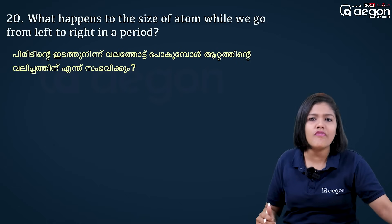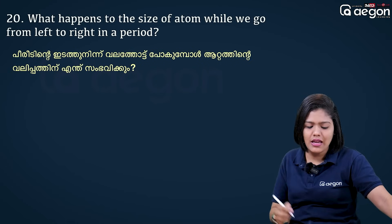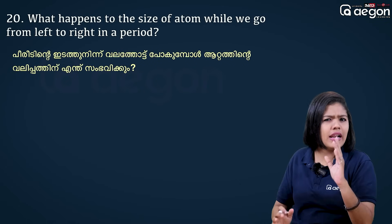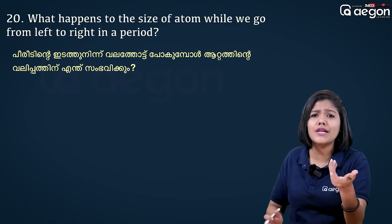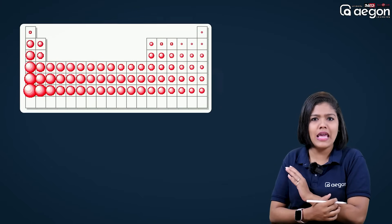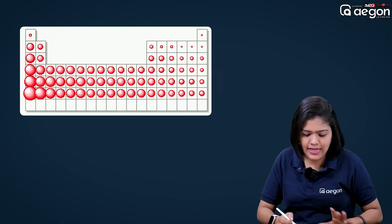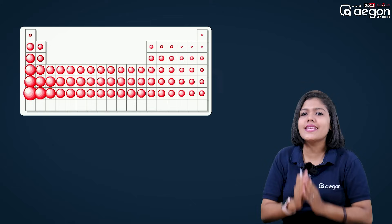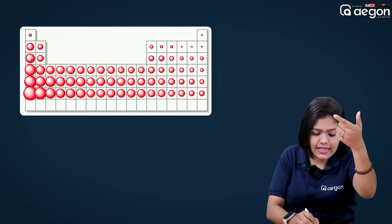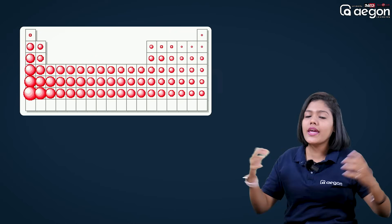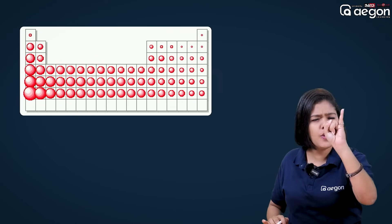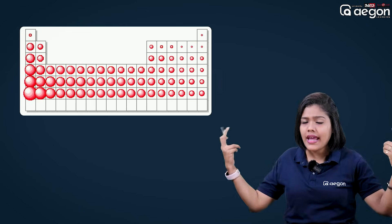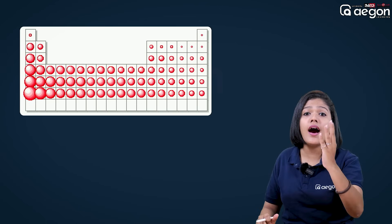What happens to the size of an atom when we go from left to right in a period? In the periodic table, when you go from left to right, the atomic size decreases. From top to bottom, the atomic size increases. The ionization energy, metallic and non-metallic character, and electronegativity are also important periodic trends.